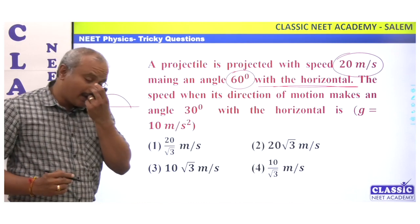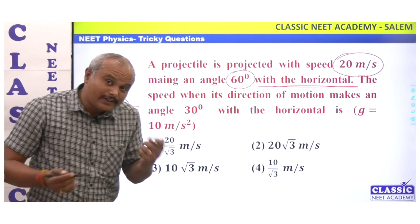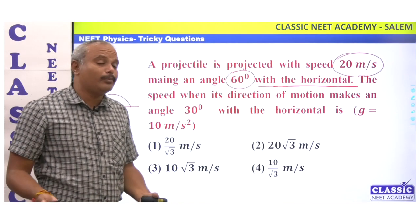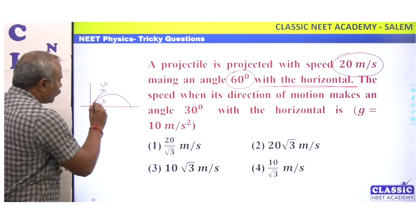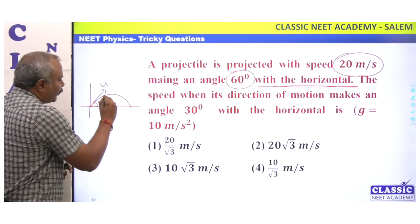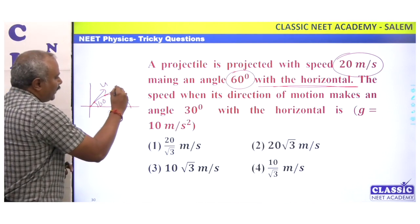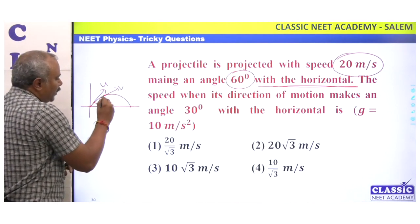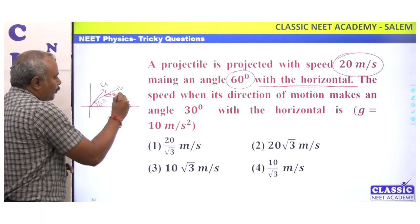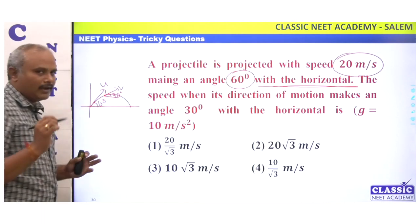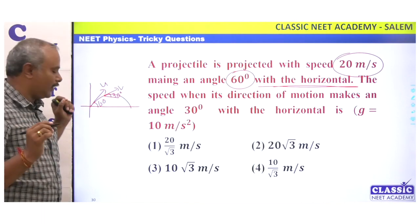If the direction of motion makes an angle of 30 degrees with the horizontal, what is the velocity V at that point?